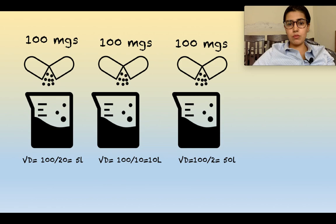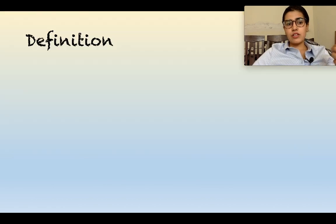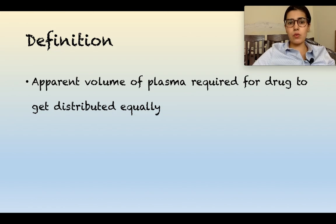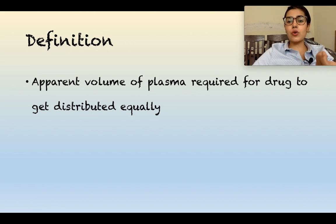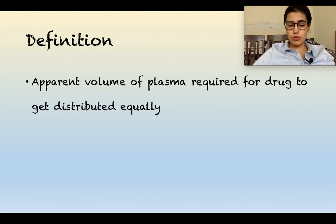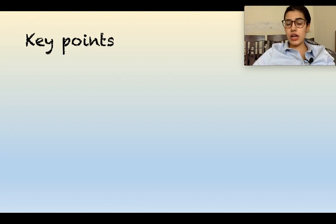To define volume of distribution: it is the apparent volume of plasma required for the drug to be distributed uniformly, if we assume uniform distribution. That hypothetical volume required is known as the apparent volume of distribution.